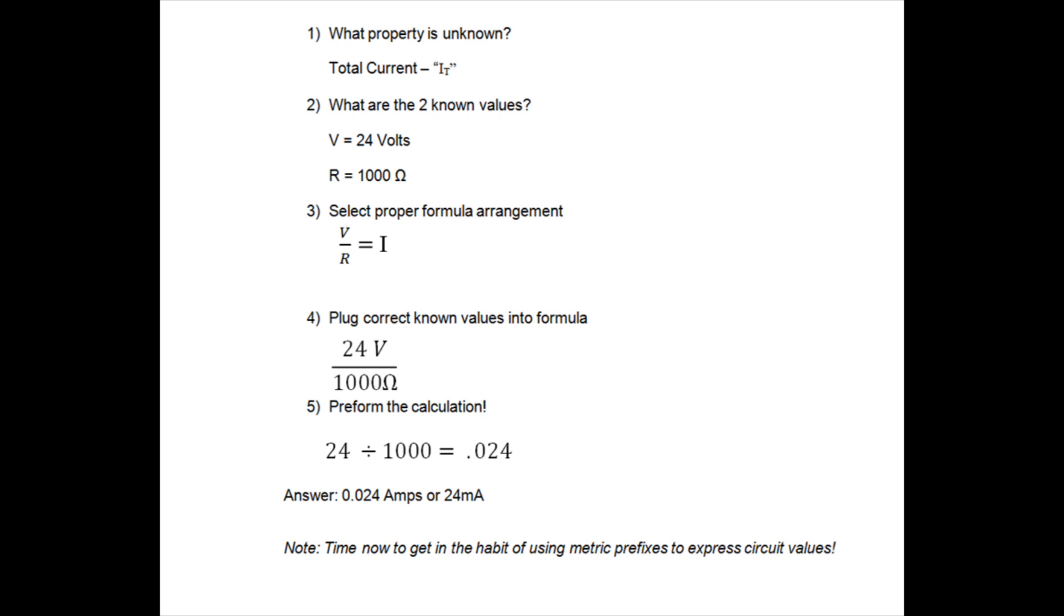Now if you remember from our metric prefix study, the answer can be converted from .024 amps to 24 milliamps. It's time now to get in the habit of using the metric prefixes, so just get in that mindset of doing that conversion.